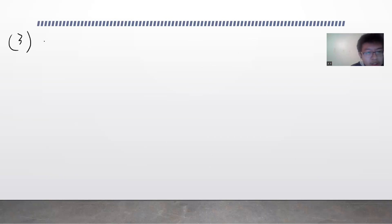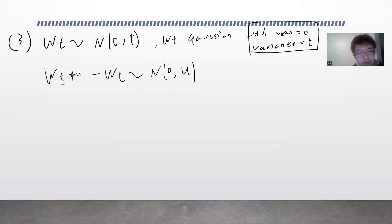The third one is that Wt is basically N(0,t). So this means that Wt is Gaussian, Gaussian normal distribution with mean 0 and variance t. And also Wt plus u minus Wt is basically N(u). So just t plus u minus t. And number four is that W has a continuous path. So simply speaking, Wt is continuous in t.